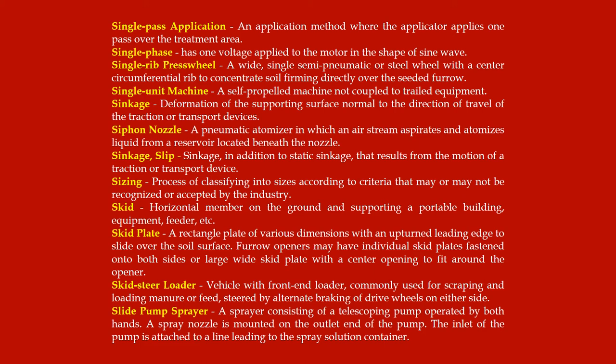Furrow openers may have individual skid plates fastened onto both sides or a large wide skid plate with a center opening to fit around the opener. Skid steer loader: a vehicle with a front end loader commonly used for scraping and loading manure or feed, steered by alternate braking of drive wheels on either side.